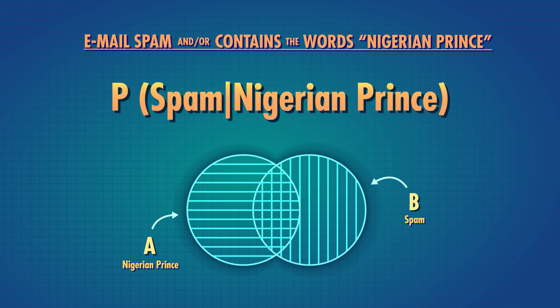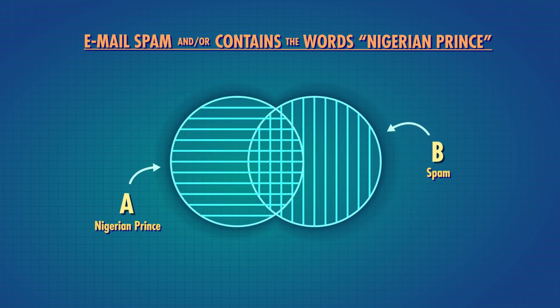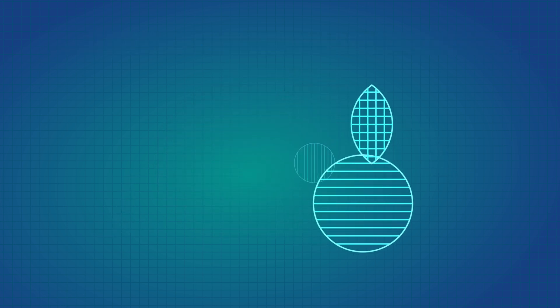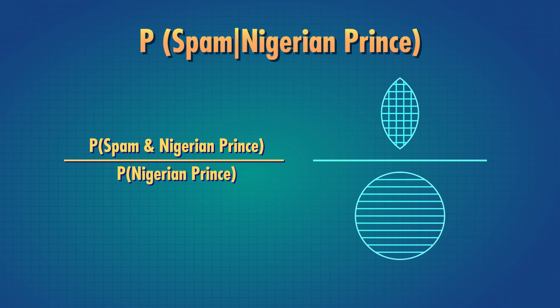This is the equation. Let's take this apart a little. On the Venn diagram, I can represent the fact that I know the words 'Nigerian Prince' already happened by only looking at the events where 'Nigerian Prince' occurs — so just this circle. Now inside this circle, I have two areas: areas where the email is Spam, and areas where it's not. According to our formula, the probability of Spam given 'Nigerian Prince' is the probability of Spam AND 'Nigerian Prince', which is this region where they overlap, divided by the probability of 'Nigerian Prince', which is the whole circle that we're looking at.